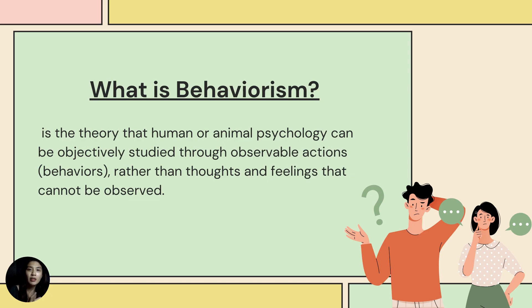To formally start our discussion, our topic for today is behaviorism perspective on teaching and learning. So what is behaviorism? It is a theory that human or animal psychology can be objectively studied through observable actions and behaviors, rather than thoughts and feelings that cannot be observed.